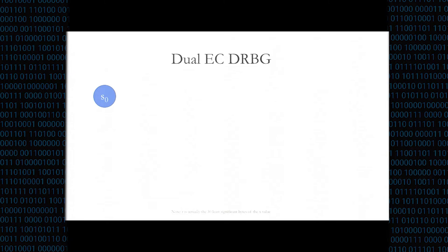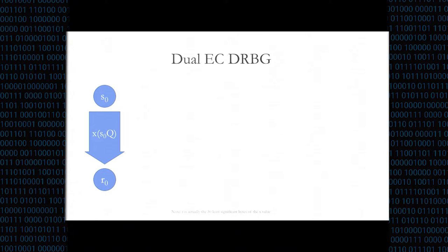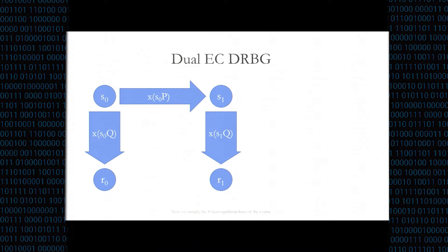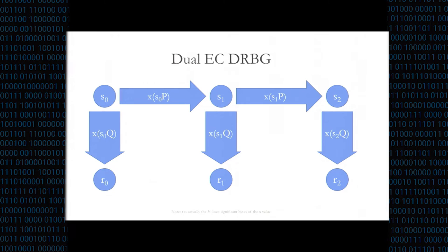Let's break down how dual EC works. You start with some state, like any random number generator, and turn that state into an infinite stream of random numbers using elliptic curve math. You take that state, multiply it by point Q — this is repeated point addition — take the X value, truncate it, and that is your output. Then to generate the next state, you do a similar operation with the other curve point P, and so on.